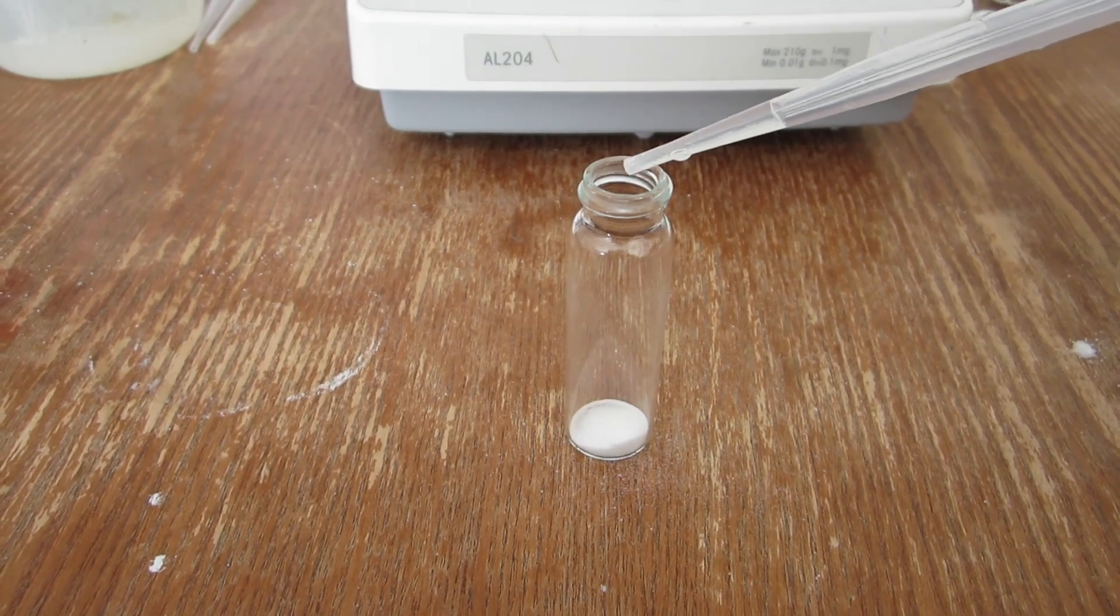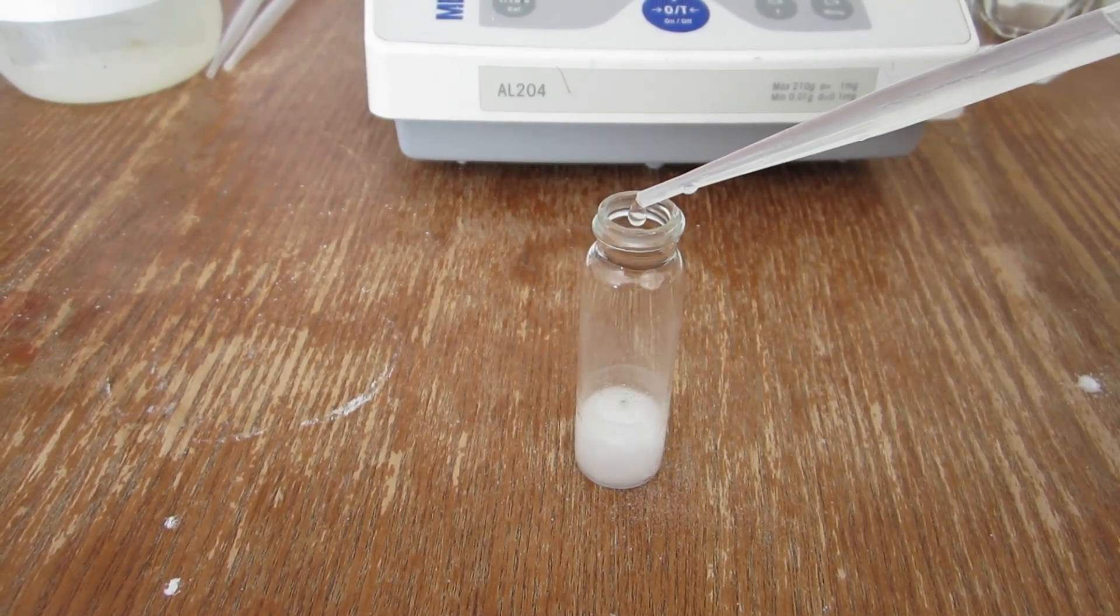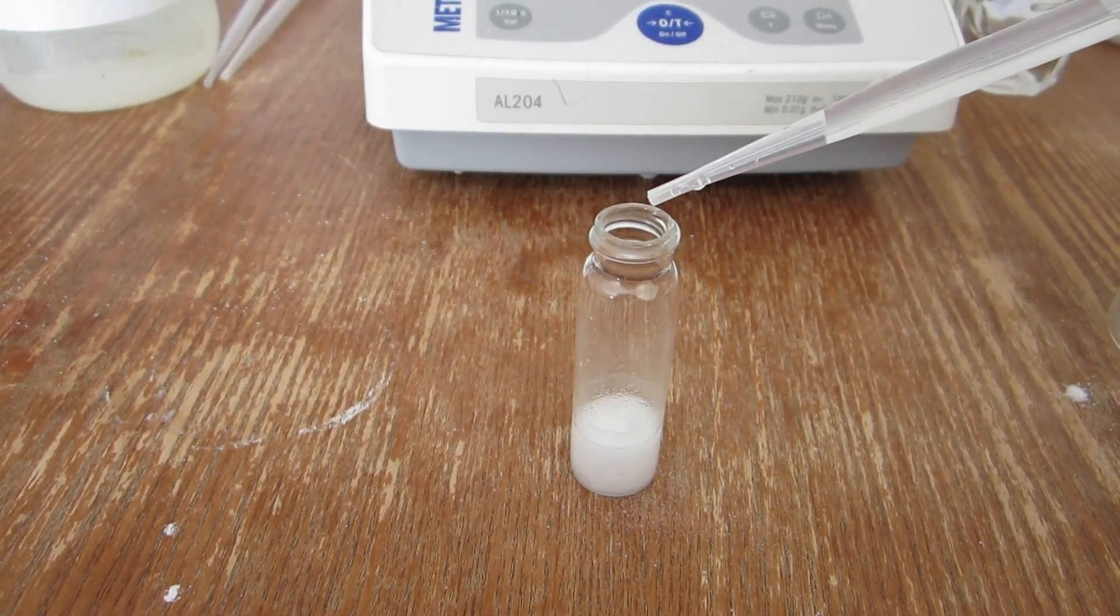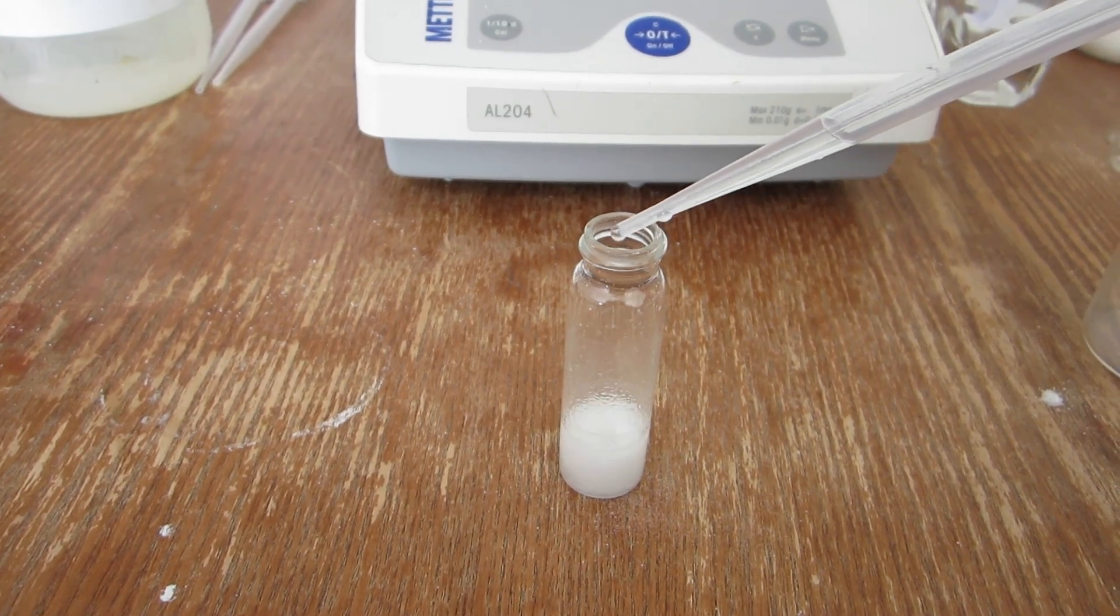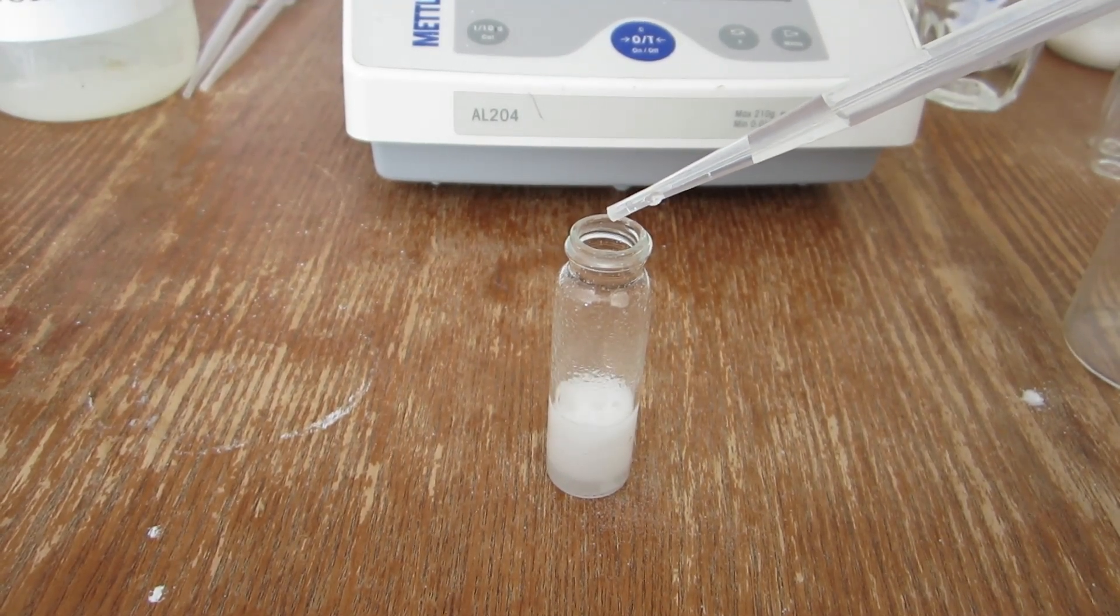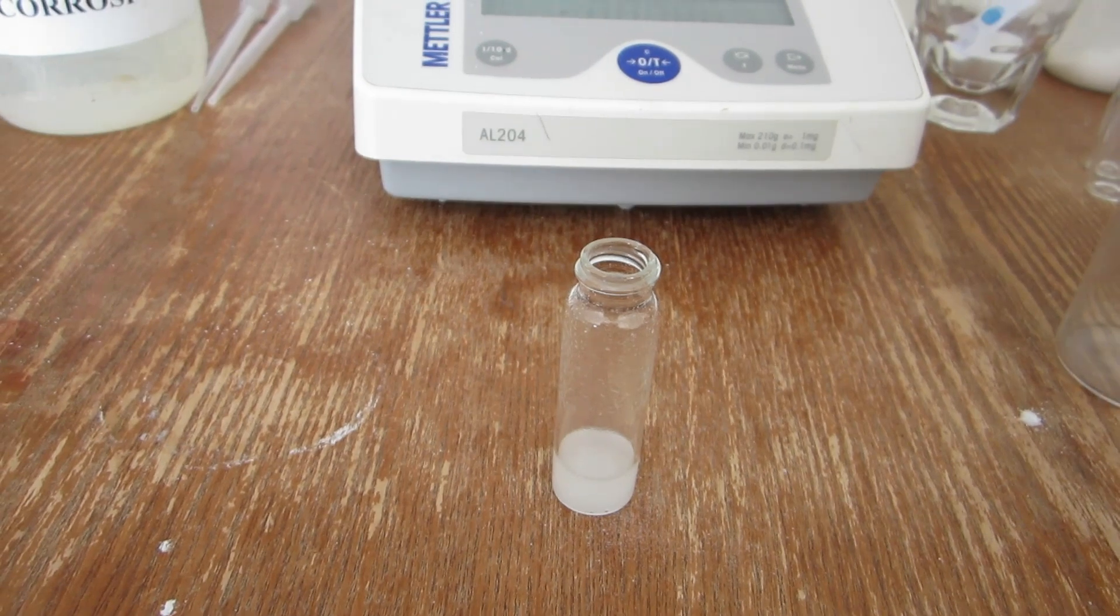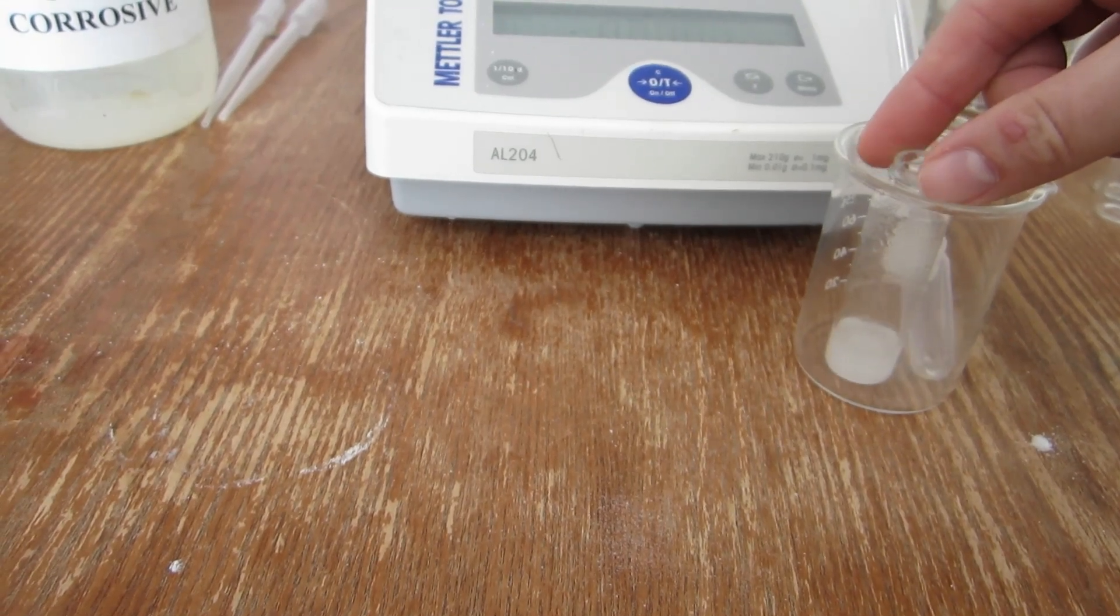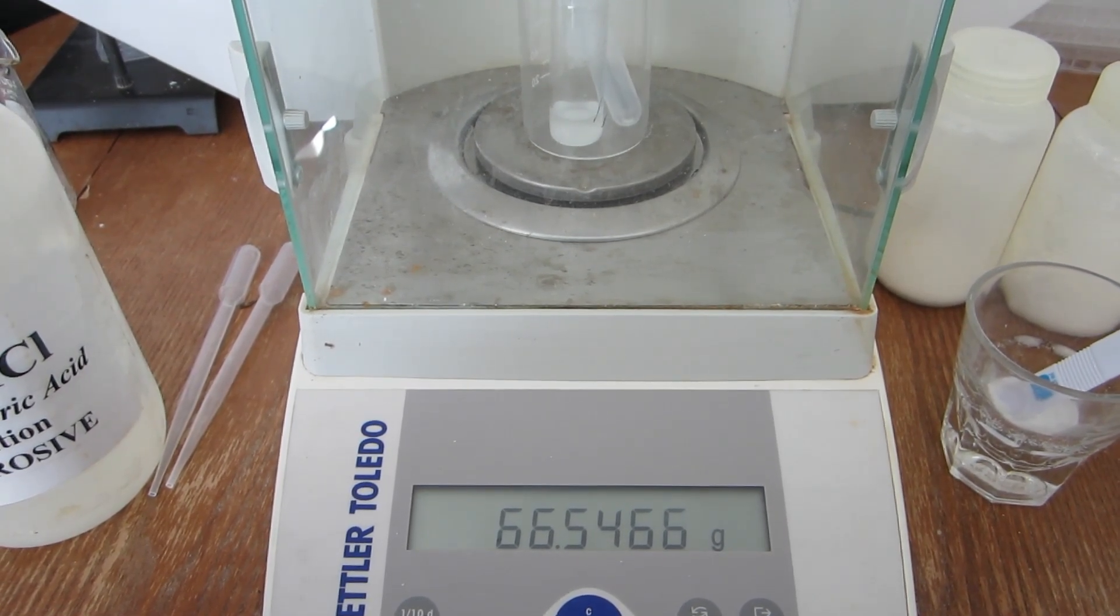Once again, the acid is slowly added to the carbonate sample to allow the release of carbon dioxide gas. After which, the vial with the empty pipette can be placed in the beaker and weighed. The final mass of the reaction setup after the reaction is displayed here.